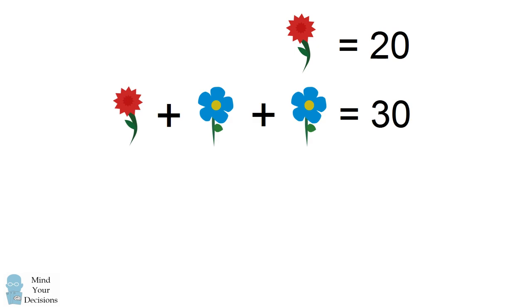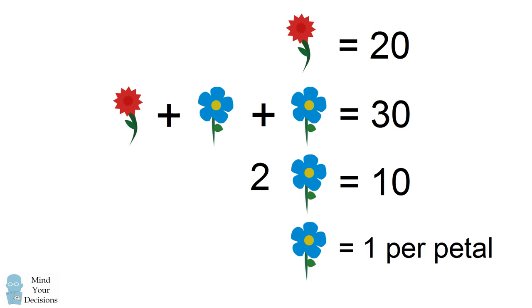The next equation has a red flower plus two blue flowers equal 30. We can use the value of 20 for the red flower, and then we have 20 plus two blue flowers with five petals equal to 30. We subtract 20 from both sides, so we have two blue flowers with five petals equaling 10. If we count each petal as a value, we have a total of 10 blue petals. So we can assign a value for a blue flower as saying it's equal to one per petal.